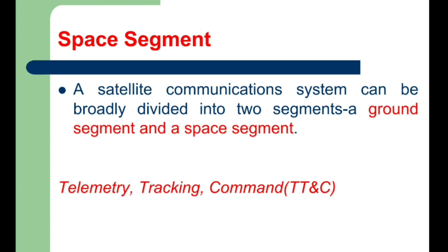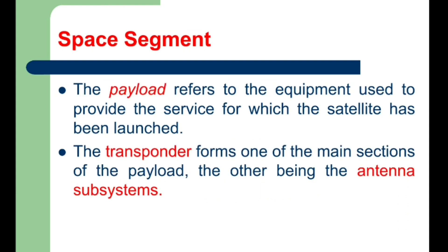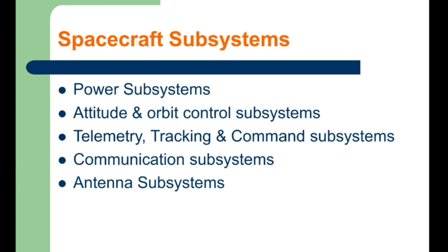The ground facilities needed to keep the satellite operational can be referred to as telemetry, tracking, and command. The payload is equipment present in the satellite; it is used to provide the service for which the satellite has been launched. The transponder is also an equipment of a communication satellite — it provides the connecting link between the satellite transmit and receive antennas.